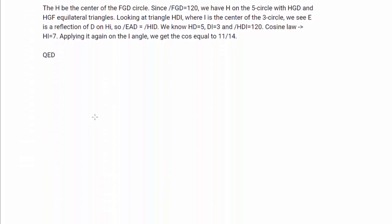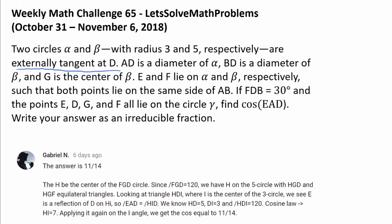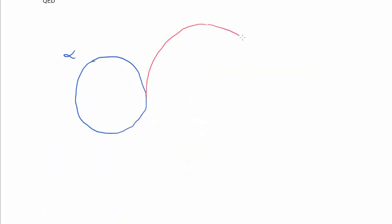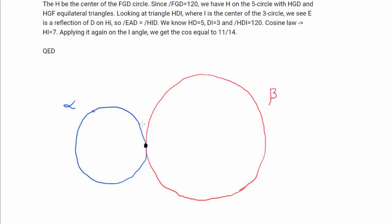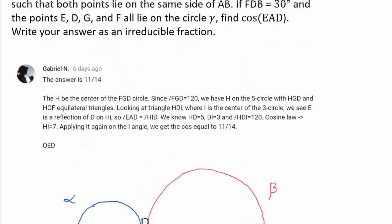So let's think about this. We have this circle alpha going like this, and we have circle beta which is larger. With radius 3 and 5, there is alpha and here is beta. Here is the point of tangency. And what else do we know?